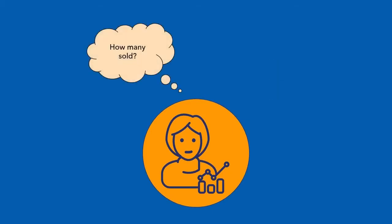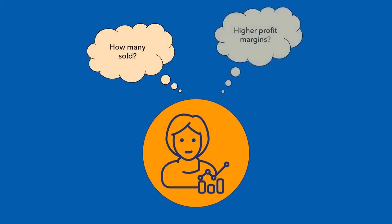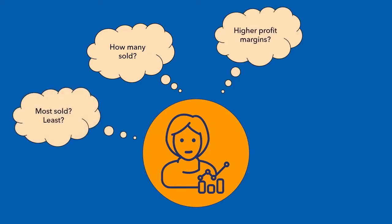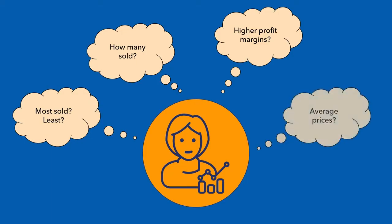Such as how many different products have been sold? Are there types of products that have higher profit margins than others? Which types of products are sold the most or the least? And what are the average prices for different product categories?